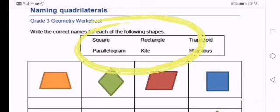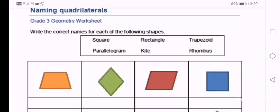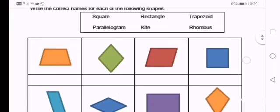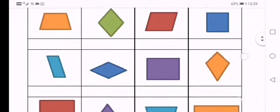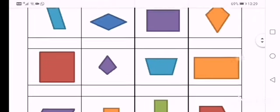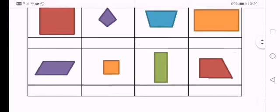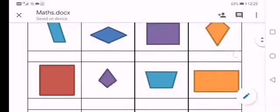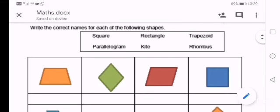You have to write the correct names for each of the following shape under the correct shape. If you are not able to print and fill it in, you are more than welcome to draw all the shapes on a paper. And then when you finish drawing all the shapes, you can color them in the same colors that we've got here. And then you can write the words under the correct shape.